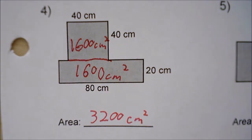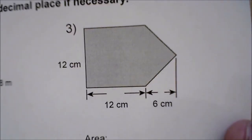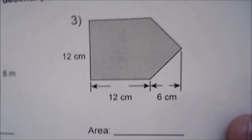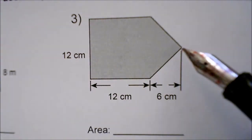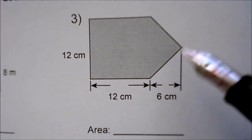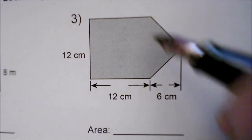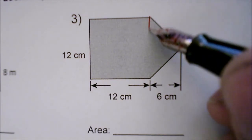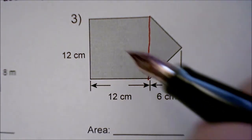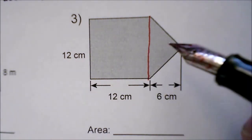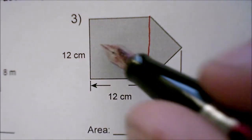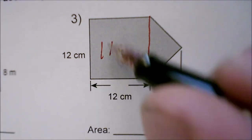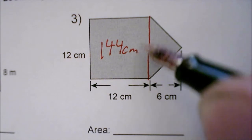Let's take a look at one more. This problem, number 3, is a little bit easier than the second example. While we could draw a horizontal line to get two trapezoids, there is enough information already for us to draw a vertical line and find the area of this square and this triangle. The square has a base of 12 and a height of 12, which gives us an area of 144 centimeters squared.